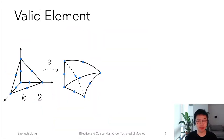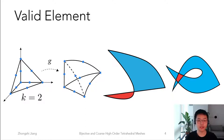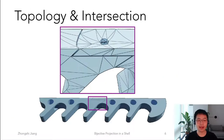Different from linear elements whose validity can be determined with a volume computation, curved elements can be partially flipped or overlapped without local inversion. We prevent both these cases from happening. Even with a really thin gap and complex features from the input, our algorithm can gracefully maintain the topology and prevent intersections from happening.